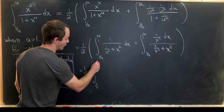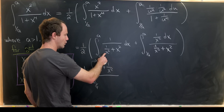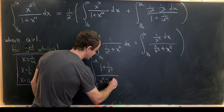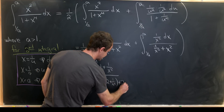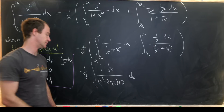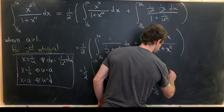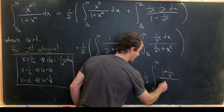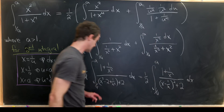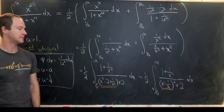We have 1 half the integral from 1 over a up to a of (1 plus 1 over x squared) over (1 over x squared plus x squared). We rewrite the denominator as x squared minus 2 plus 1 over x squared, then plus 2, completing the square by adding and subtracting 2. So now we have 1 half the integral from 1 over a to a of (1 plus 1 over x squared) over (x minus 1 over x) squared plus 2, factoring the trinomial into a binomial squared.